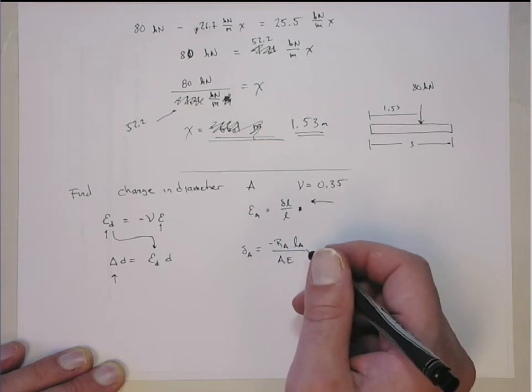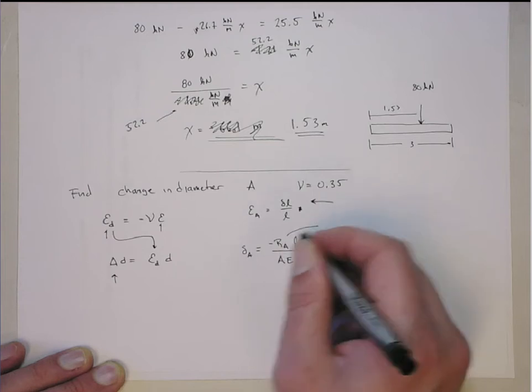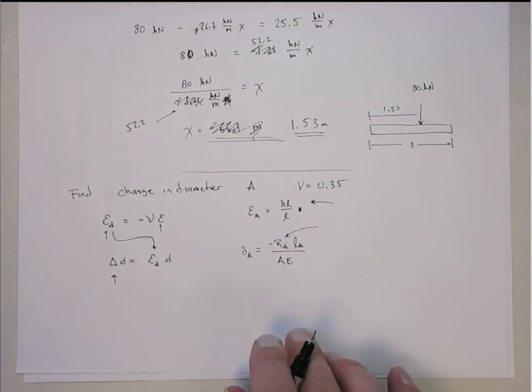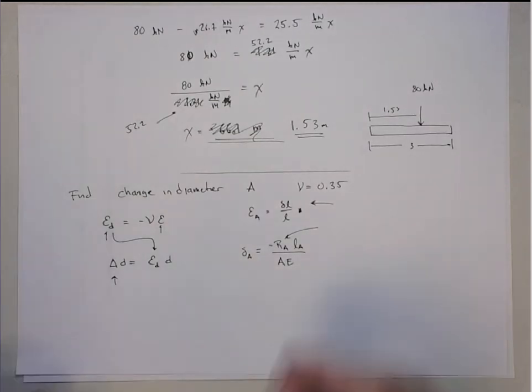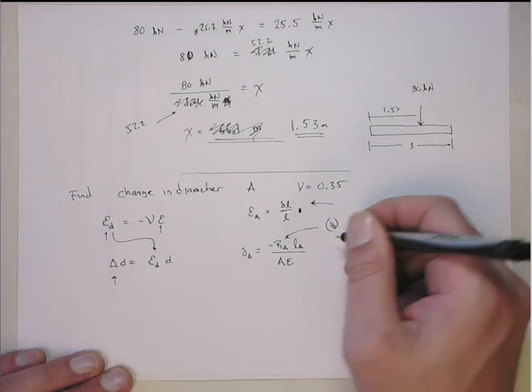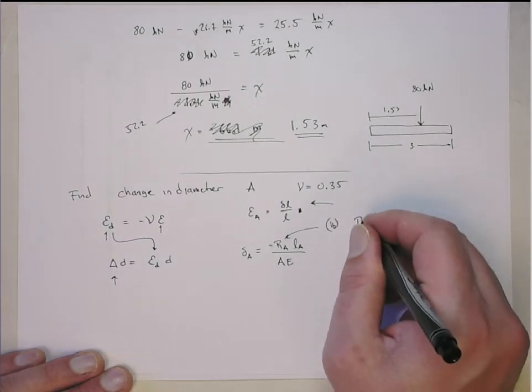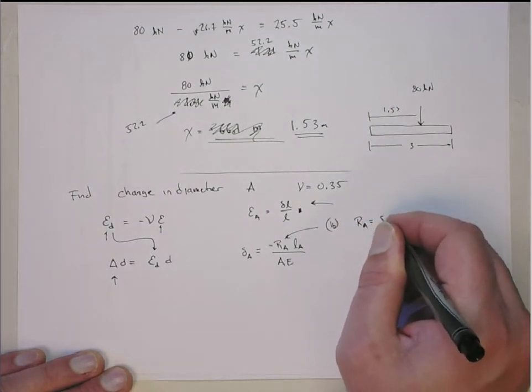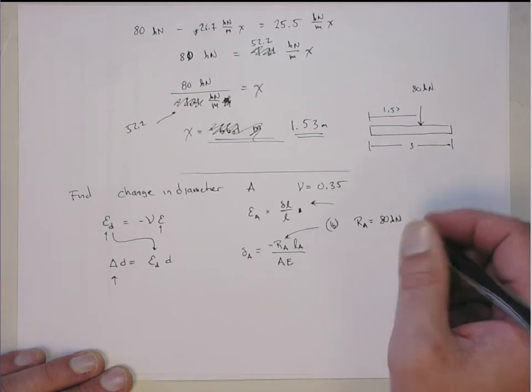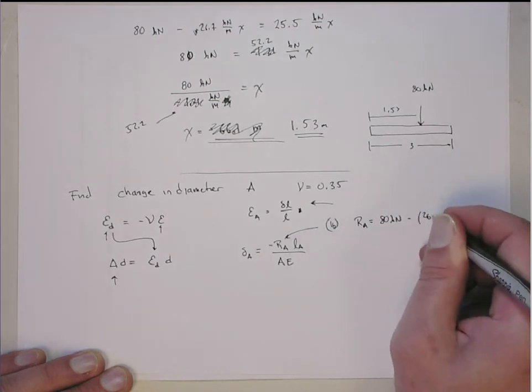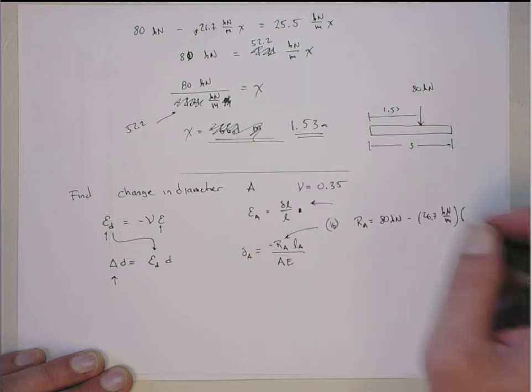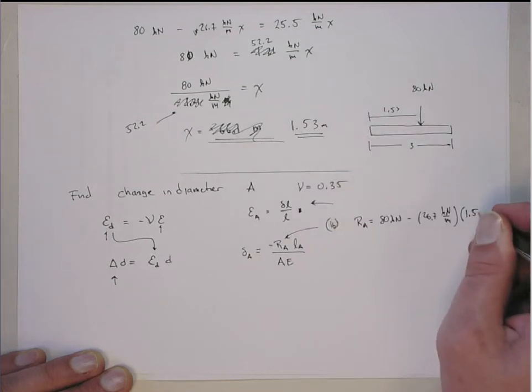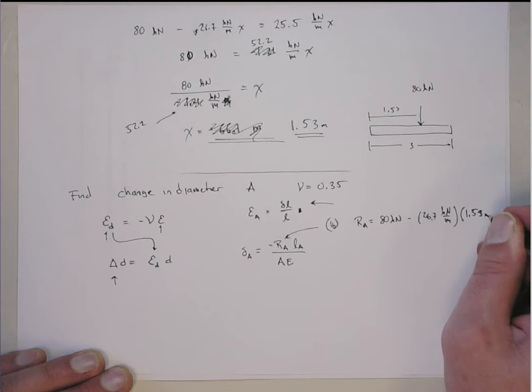I didn't explicitly get the reaction force before, but I can do that now. If you go back to the prior video, we can get that from equation 1B. That gives us that reaction A is equal to 80 kilonewtons minus 26.7 kilonewtons meters times x, but we found out in the prior part that x is 1.53 meters.